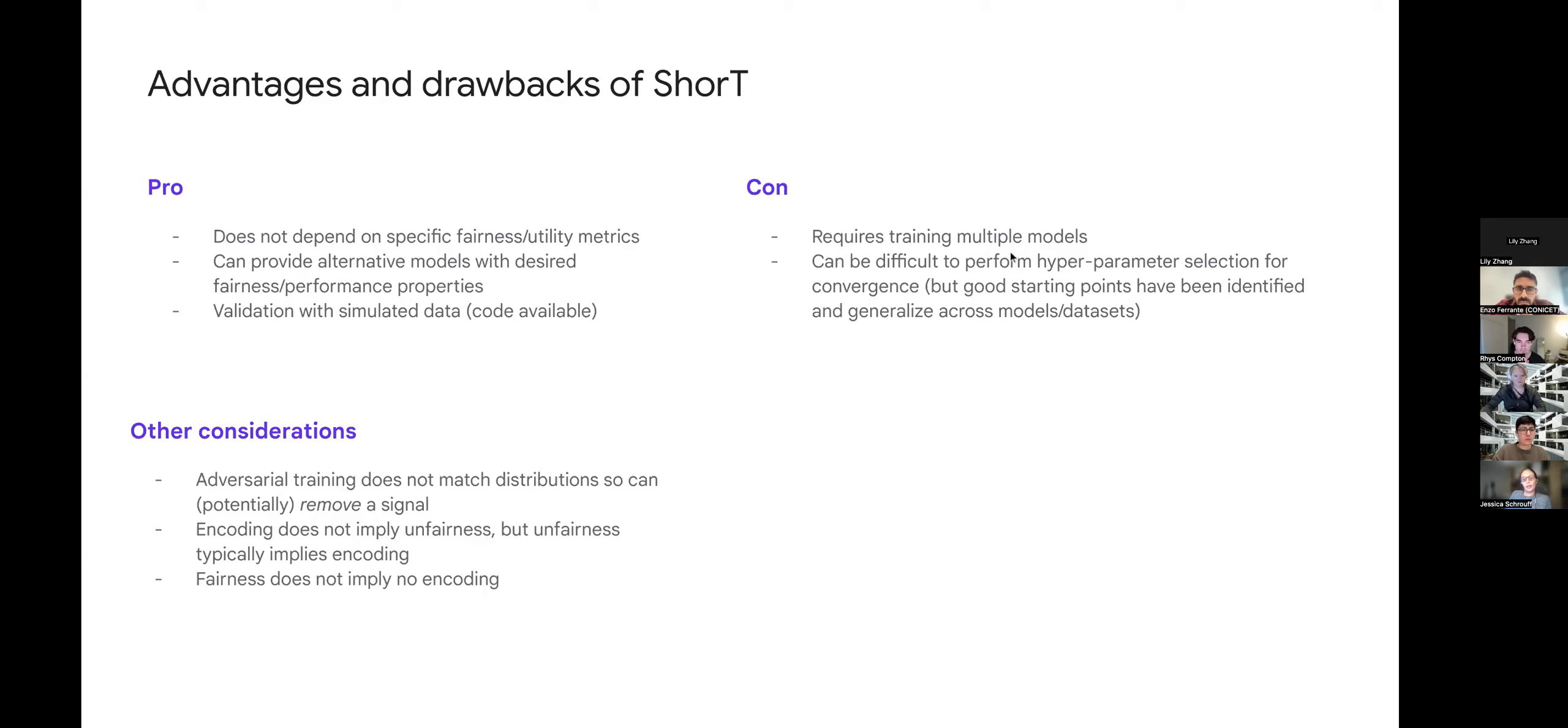In terms of drawbacks, it requires training multiple models, which can be expensive. We trained 125 models. I'm not sure it needs to go to that length, but it still can be expensive. Performing hyperparameter selection can be quite difficult. We have identified starting points that have been generalizable across models and datasets. But we've converged and have satisfactory results, but there might always be hyperparameters that might be even better. Hyperparameter tuning in this case remains a bit of a challenge.